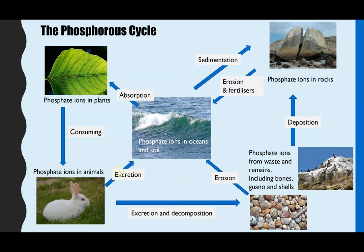After that there are two arrows representing similar processes. Some excretion will contain phosphate ions and could go directly back into oceans, rivers, or soil. There's also an arrow for excretion and decomposition — decomposition occurring after the animal dies and the material breaks down. The excretion part is specifically linked to guano, which can be seen in the photo.